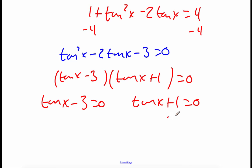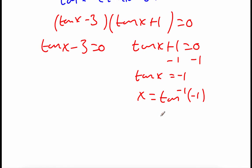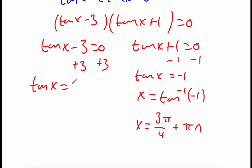We can factor this using sum and product factoring: tangent of x minus 3 times tangent of x plus 1 equals 0. Setting each factor equal to 0: for tangent of x plus 1 equals 0, we get tangent of x equals negative 1, so x equals the inverse tangent of negative 1, which is 3 pi over 4, giving x equals 3 pi over 4 plus pi n. For tangent of x minus 3 equals 0, tangent of x equals 3. We can't find this on the unit circle, so we just leave it as x equals the inverse tangent of 3 plus pi n.